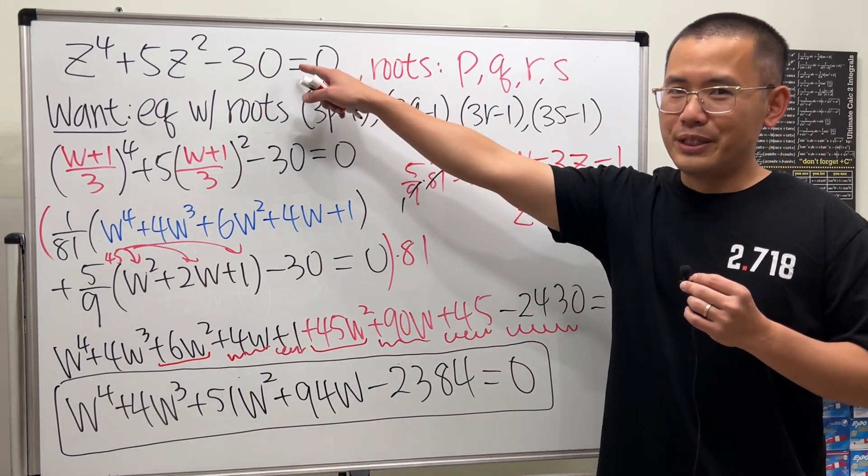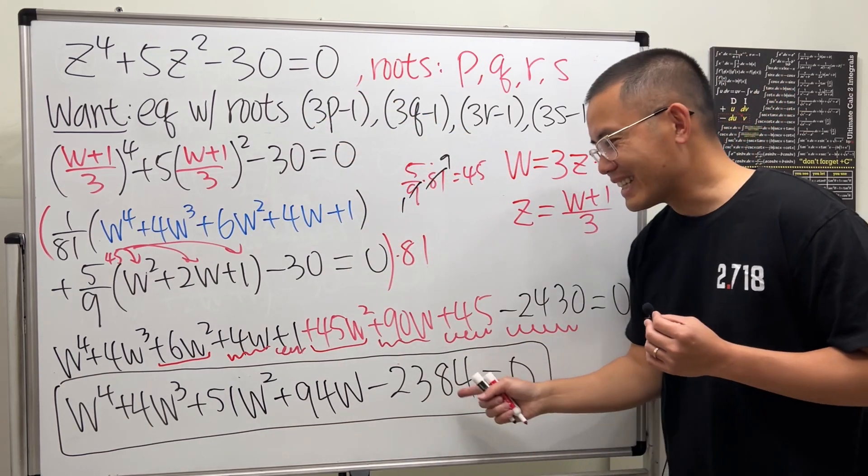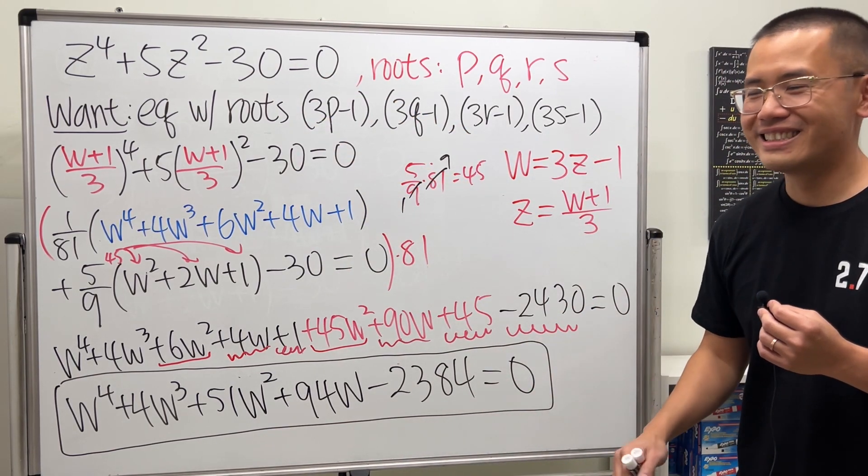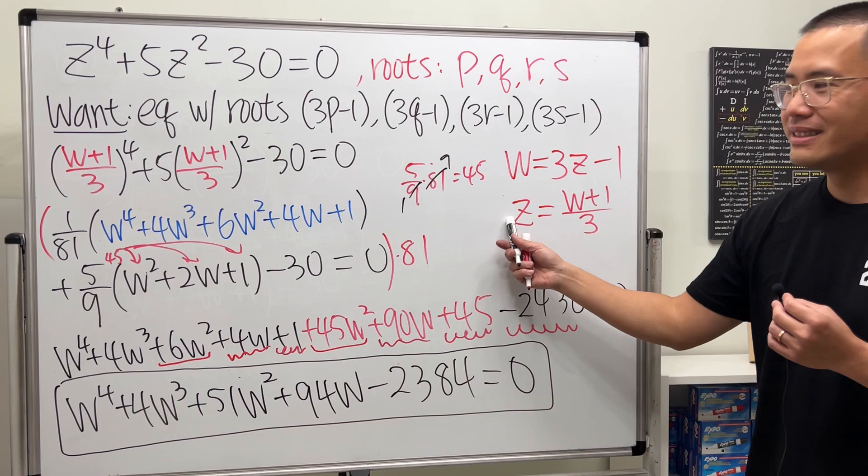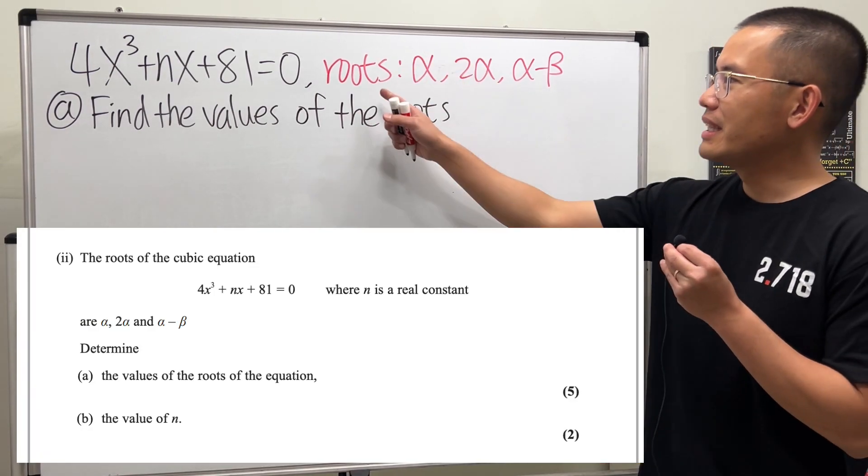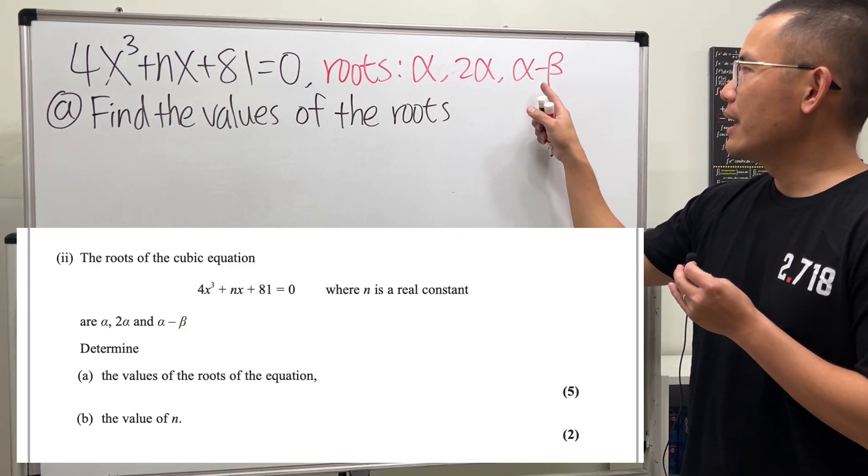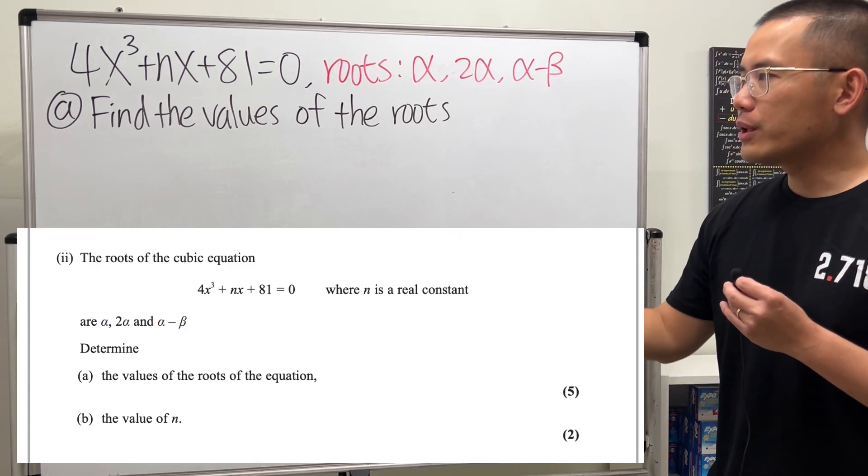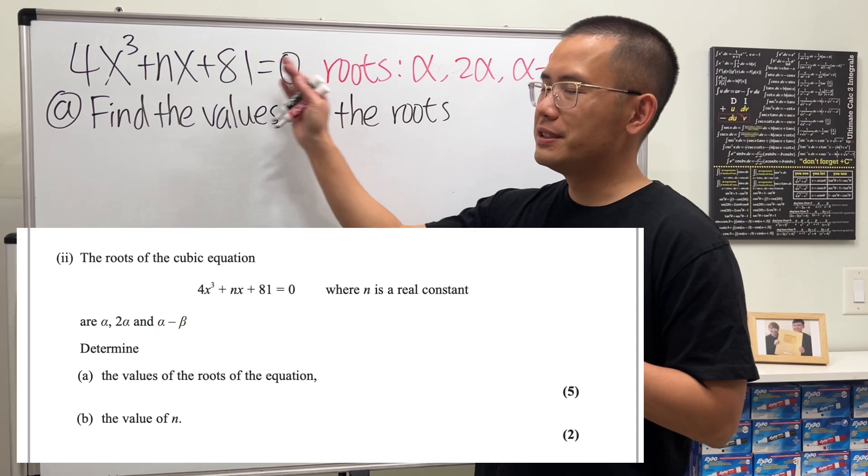So that is the equation that we want. So we're not solving the equation, we're trying to get another equation for the first part. Now let's take a look at part 2. Now for part 2, we have a cubic equation. And once again, they gave us the roots: α, 2α, and α - β. And then we're going to use this to actually solve for this equation.